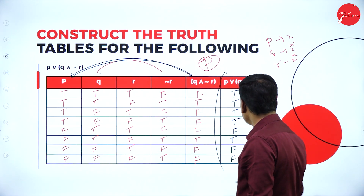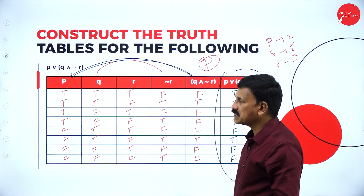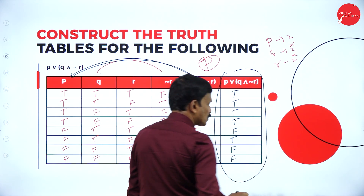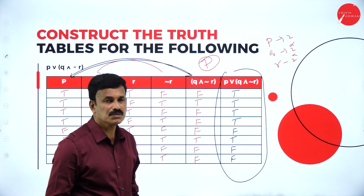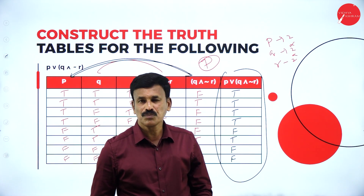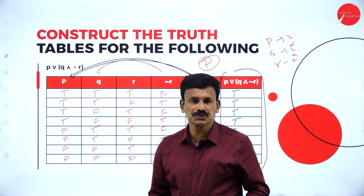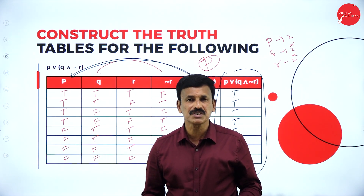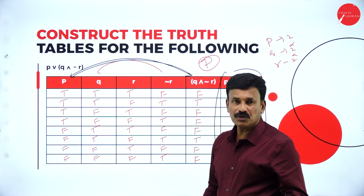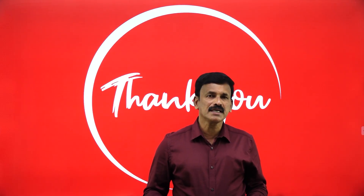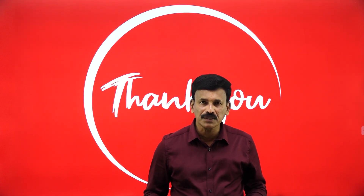Hence the truth values for P disjunction Q conjunction negation R — this is neither a tautology nor a contradiction. This is how we solve these problems. Hope you followed. These are a few problems related to the construction of truth tables; you may expect this type of question for 7 or 8 marks. That is all for today's session. Let us meet with a different concept in the next session. Thank you very much.